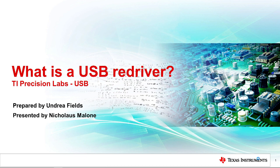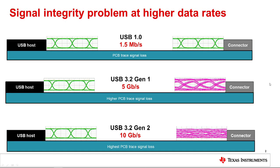In future sessions we will discuss the different types of redrivers. At its conception in 1996, the data rate of the USB port was 1.5 megabits per second. The interface was primarily used for a keyboard and mouse connection to a PC. Today the USB interface data rate has increased to a staggering 40 gigabits per second. At such high data rates, adequate signal integrity can be difficult to maintain over transmission media commonly used in today's devices such as cables, PCB traces, and flexible PCB.